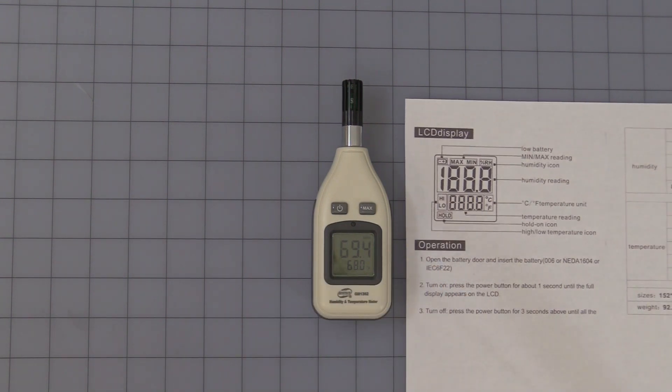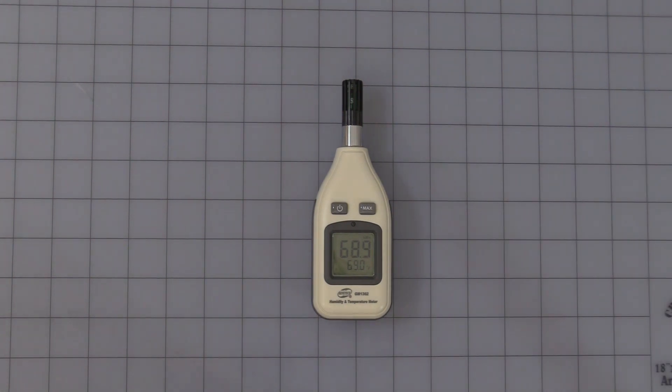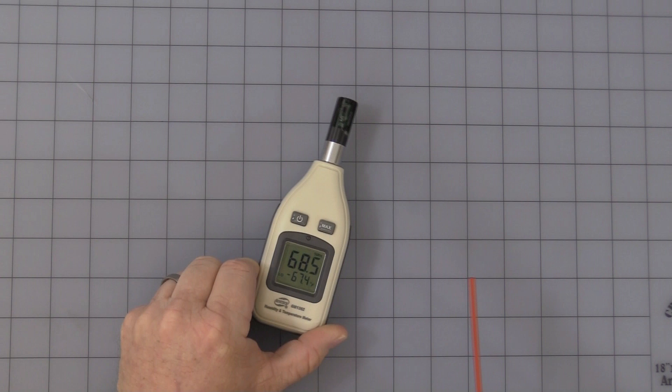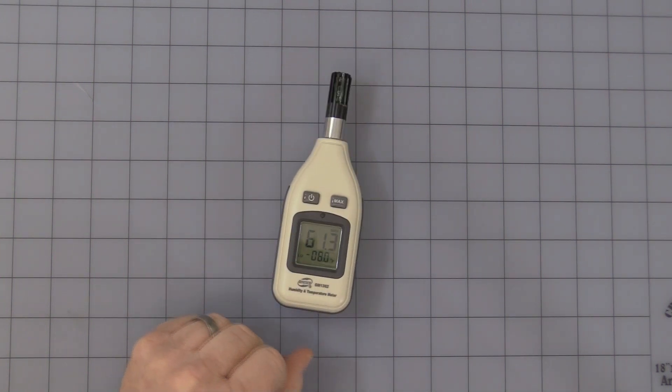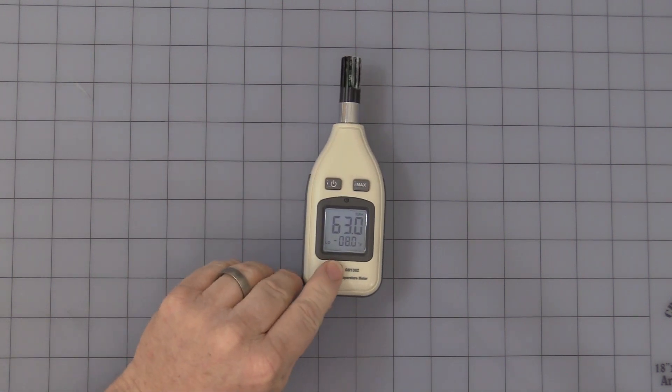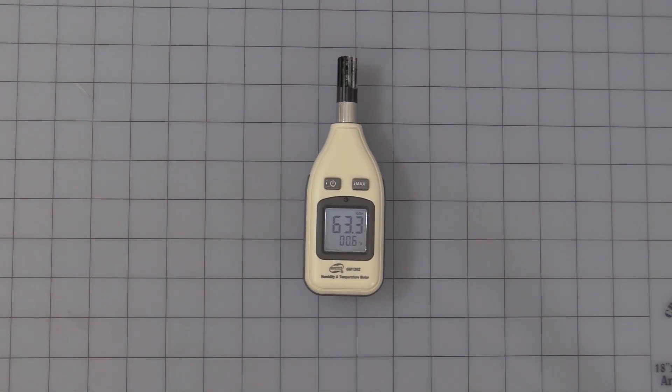I probably can show you real quick just with a quick little can of compressed air to get the temperature to drop. Oh, already that fast. You can see the little, turn on the backlighting again, the LO for low.